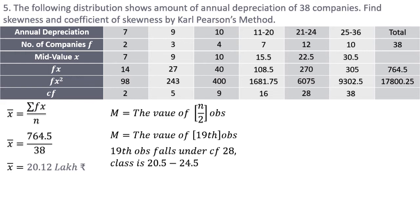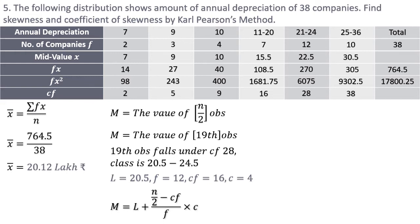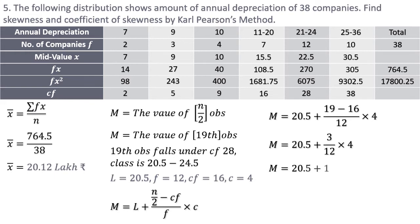These classes are inclusive — 11 to 20, then 21 to 24 — so for inclusive classes we deduct 0.5 from the lower limit and add 0.5 to the upper limit, making the actual class 20.5 to 24.5. The lower limit is 20.5, frequency is 12, cf before this class is 16, and class length is 4. Using the median formula L + [(n/2 − cf) / f] × c: 20.5 + [(19−16)/12] × 4 = 20.5 + 1 = 21.5 lakh rupees.